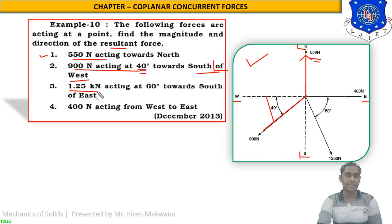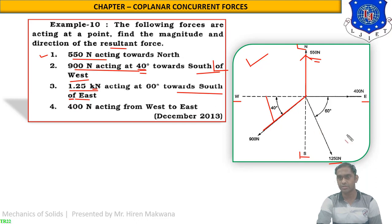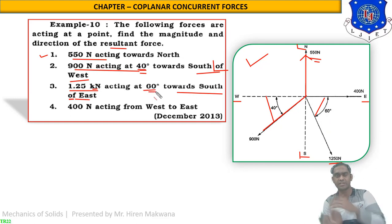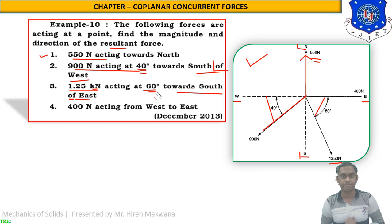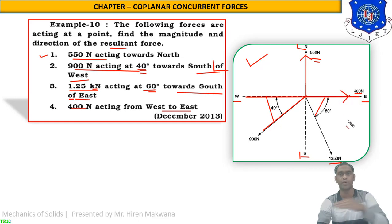The next force is 125 kilonewton — note all forces are in newton, so convert this to 1250 newton. This force acts towards south of east, meaning from east towards south, at an angle of 60 degrees. The last force is 400 newton acting from west to east, that is, in the eastward direction. Note that in this numerical the figure is not given in the data, so you must read all four forces, draw the figure yourself, and mark the angles correctly.